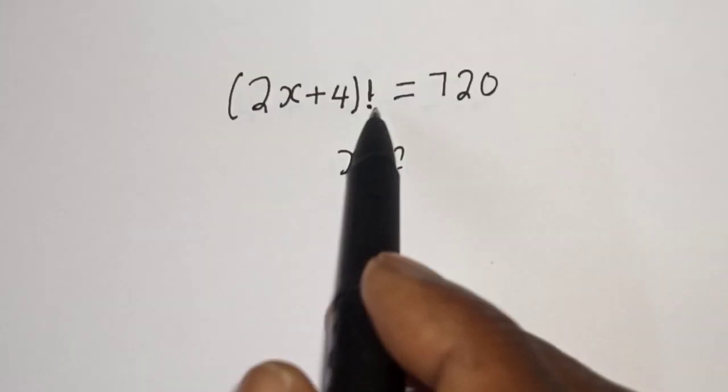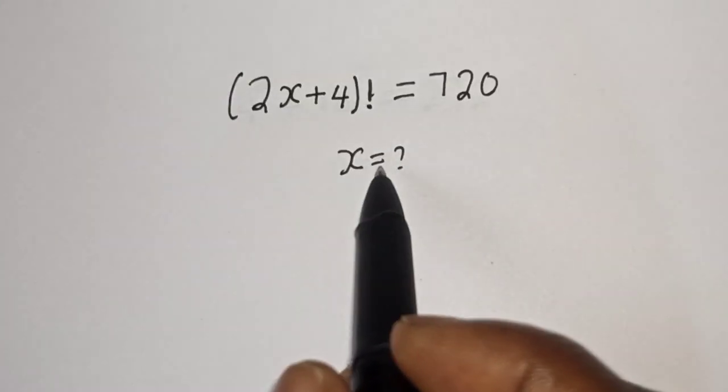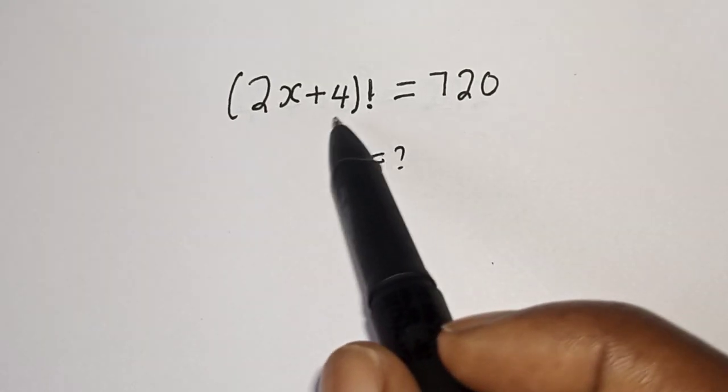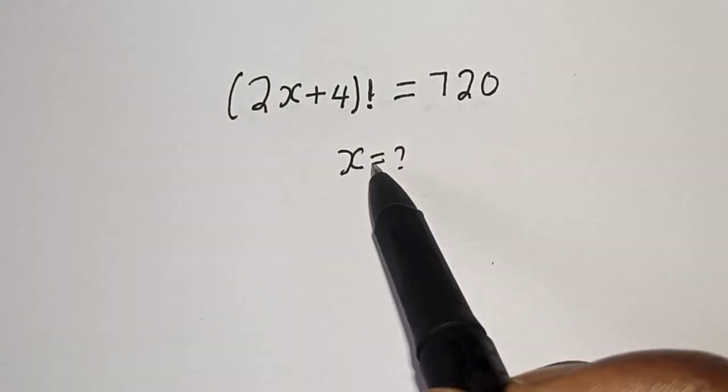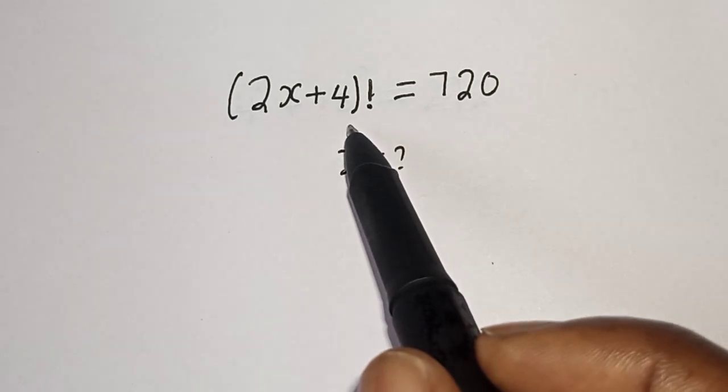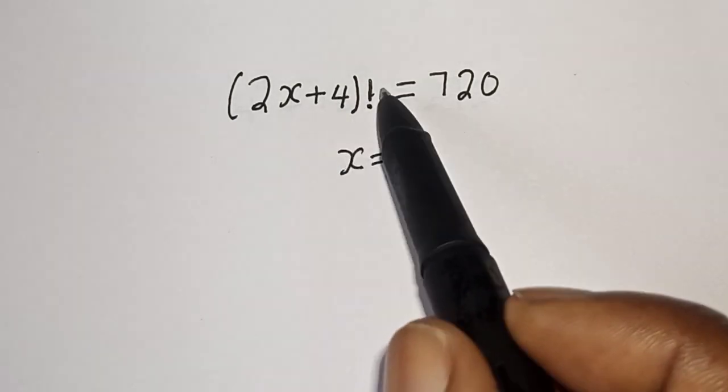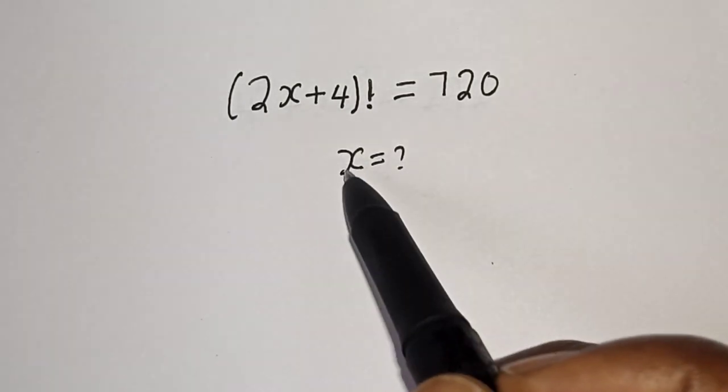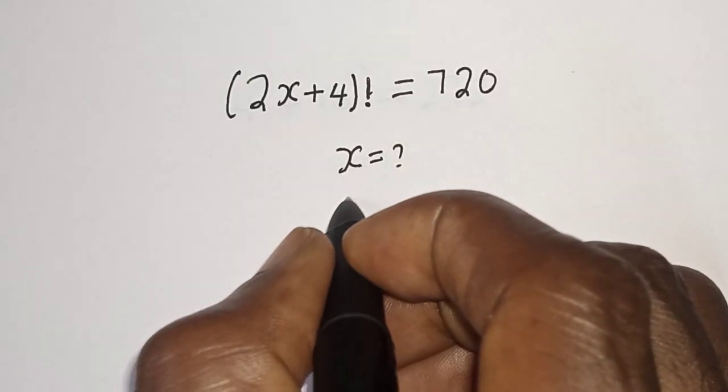2x plus 4 factorial is equal to 720. What is the value of x? Hi everyone, welcome to my class. In this class I want to find the value of x from this nice factorial equation. But before we proceed, please don't forget to like, share, comment and subscribe.